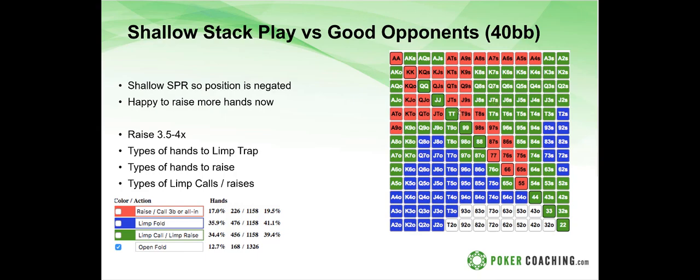One important note here: we now have a few more limp traps. We're limp trapping some big suited aces, big offsuit aces, and middling pocket pairs. Specifically, we limp queens through eights but raise kings and aces. The reason: I'd rather limp trap with jacks or queens so the opponent might have ace-five offsuit, raise it up, and then I can limp re-raise and get all the money in for 40 big blinds.